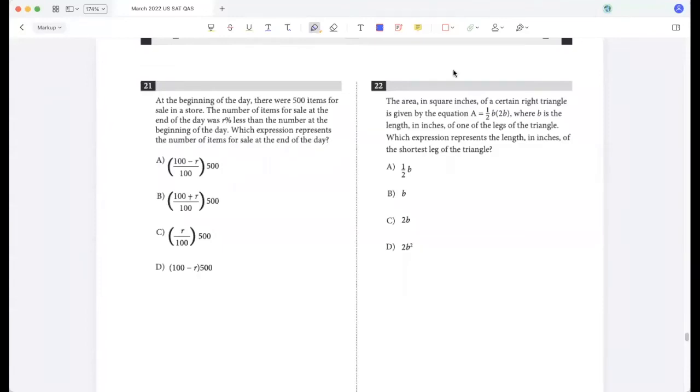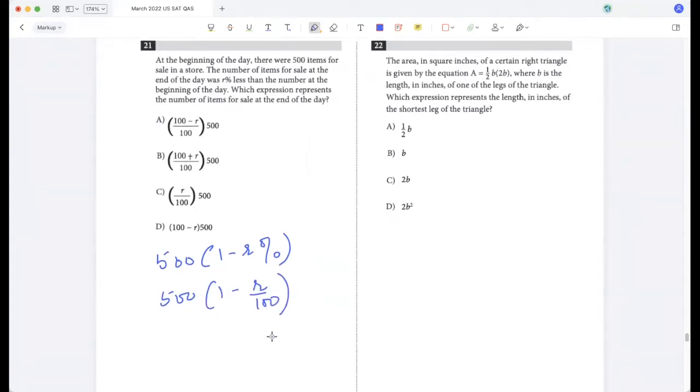Problem 21: At the beginning of the day there were 500 items for sale in a store. The number of items for sale at the end of the day was r percent less than the number at the beginning of the day. Which expression represents the number of items for sale at the end of the day? So 500 times one minus r percent, that is 500 times one minus r by 100, so that's 500 times 100 minus r by 100.